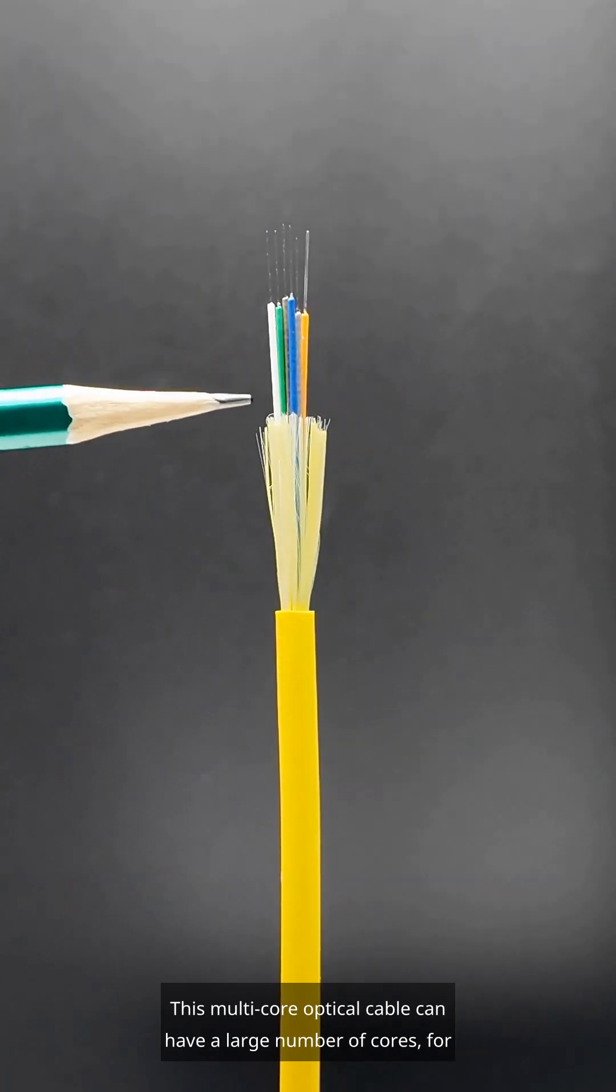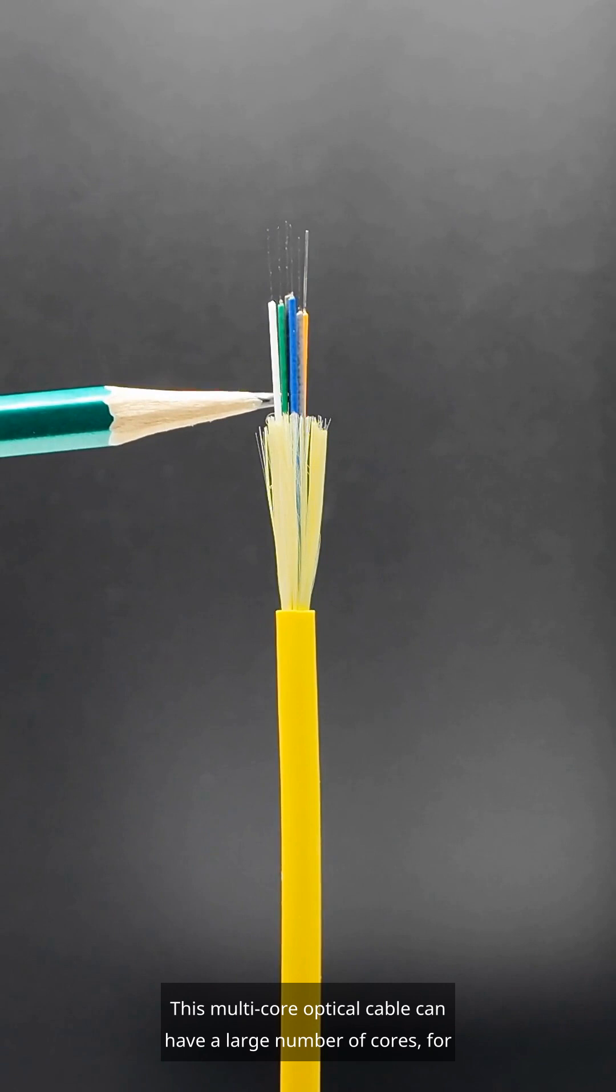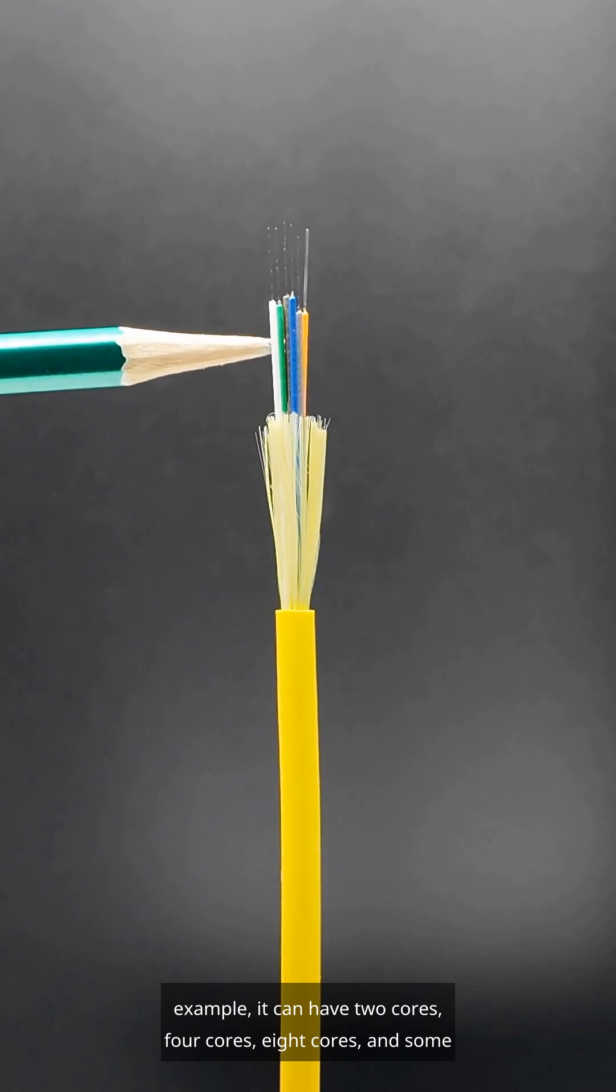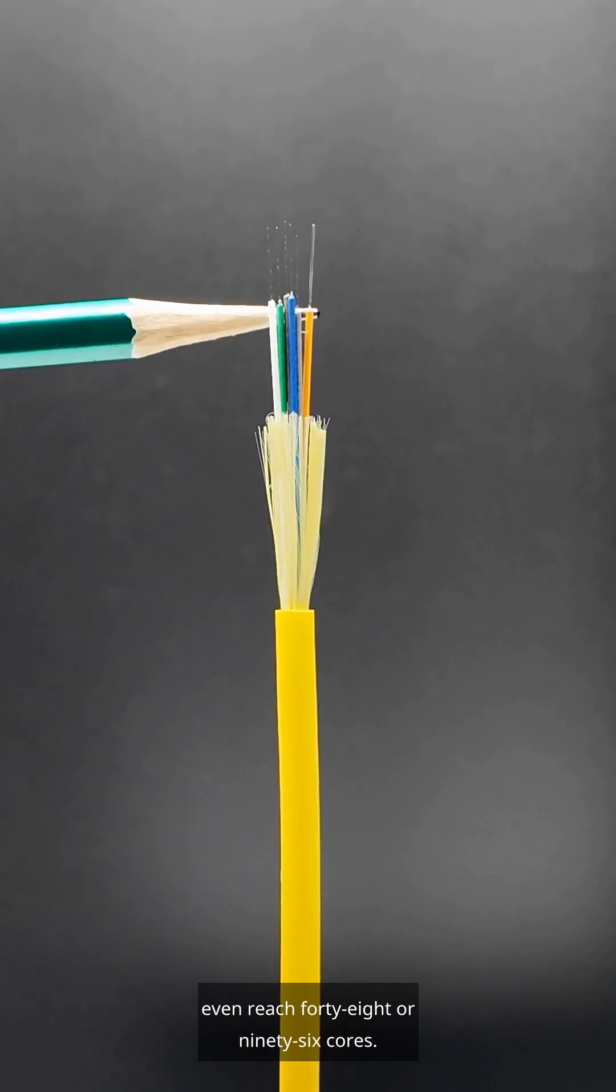This multi-core optical cable can have a large number of cores. For example, it can have 2 cores, 4 cores, 8 cores, and some even reach 48 or 96 cores. Let's take a look at the structure of this cable.